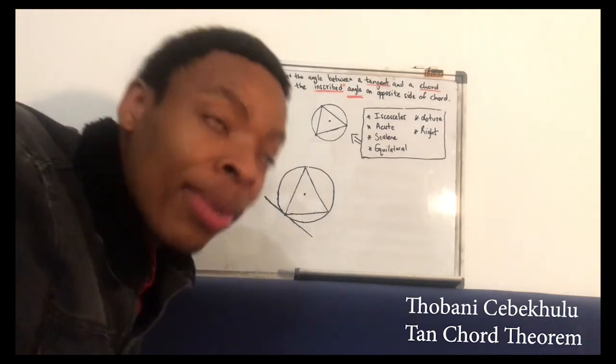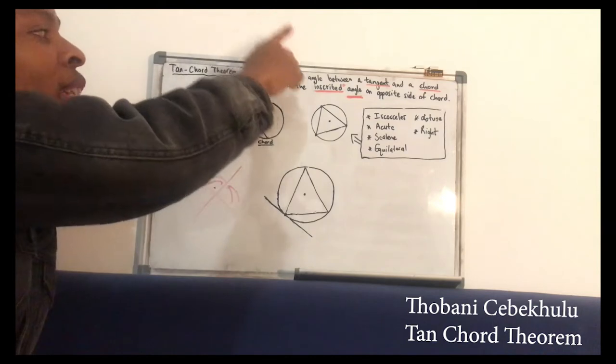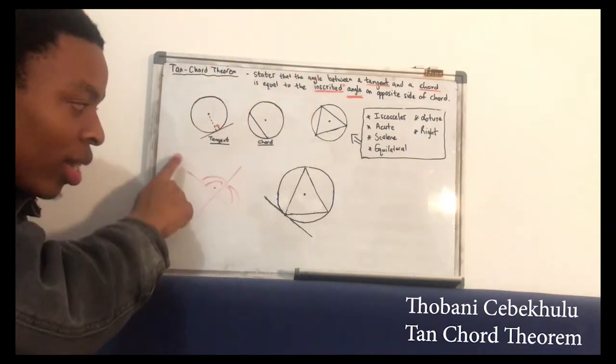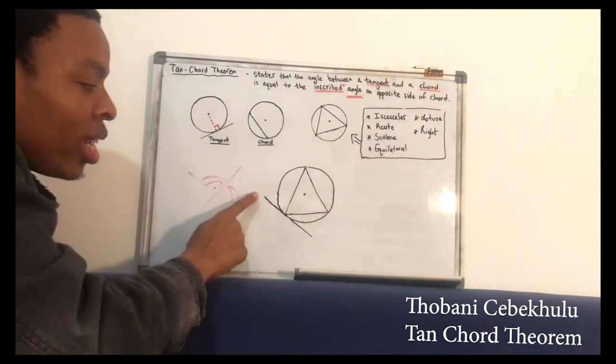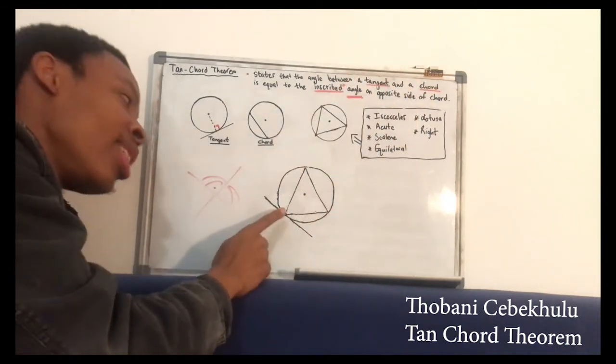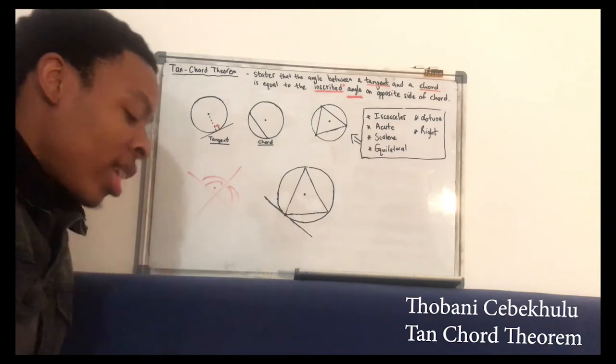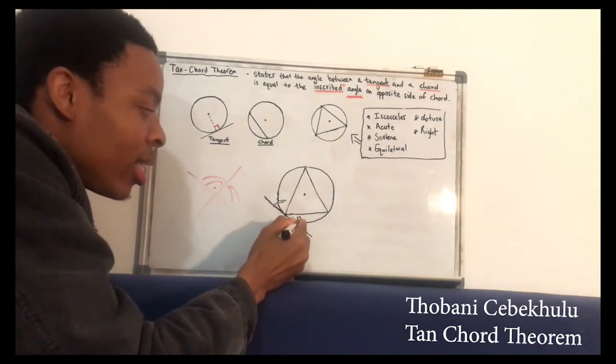So upon understanding these terms, the theorem states that we're expecting two lines to intersect. Which are those lines? It's going to be a tangent and a chord. This is the tangent. This is the chord. And they intersect in this point to make this angle and this angle.